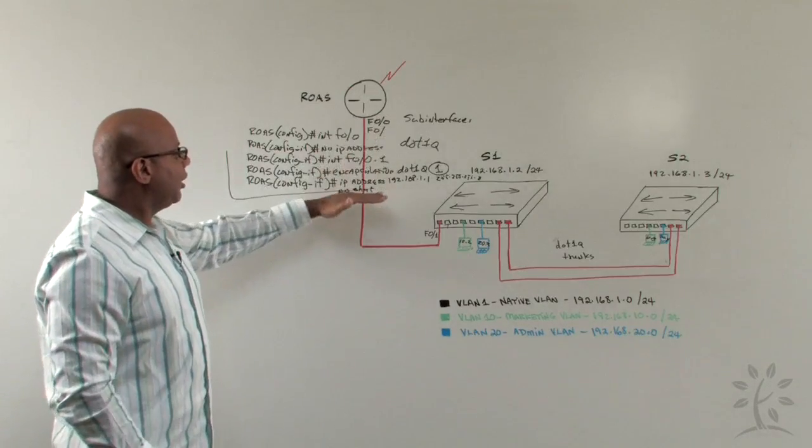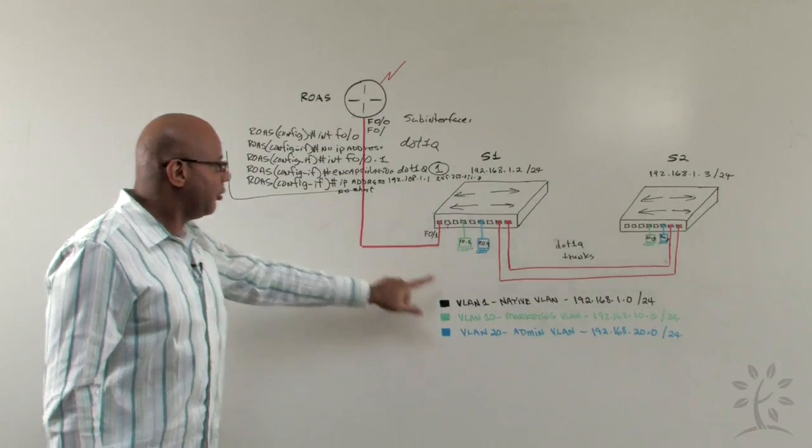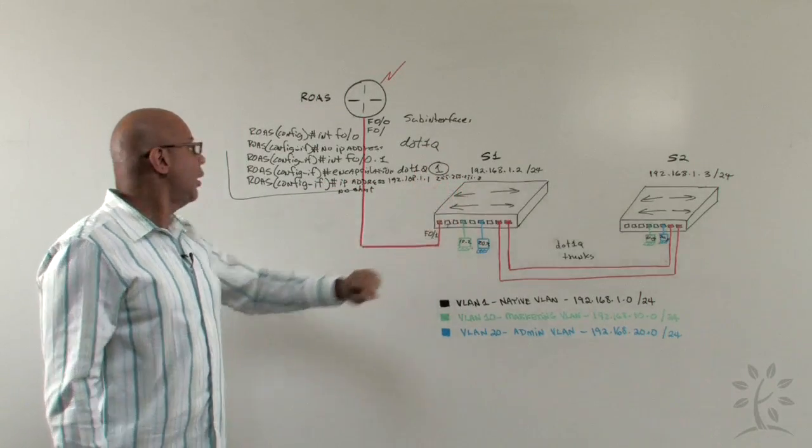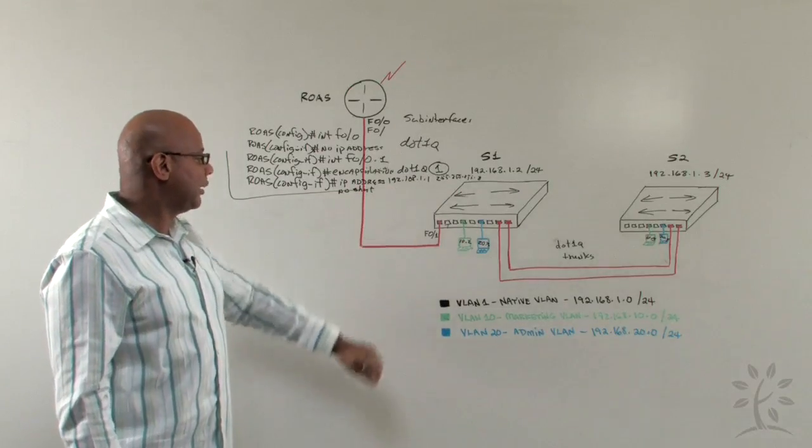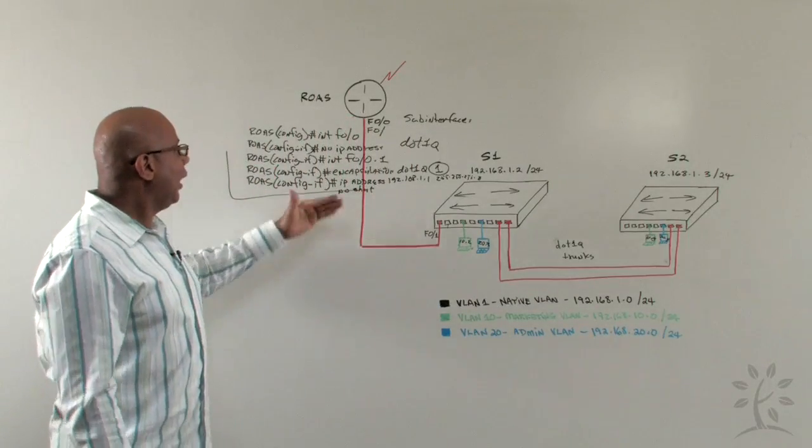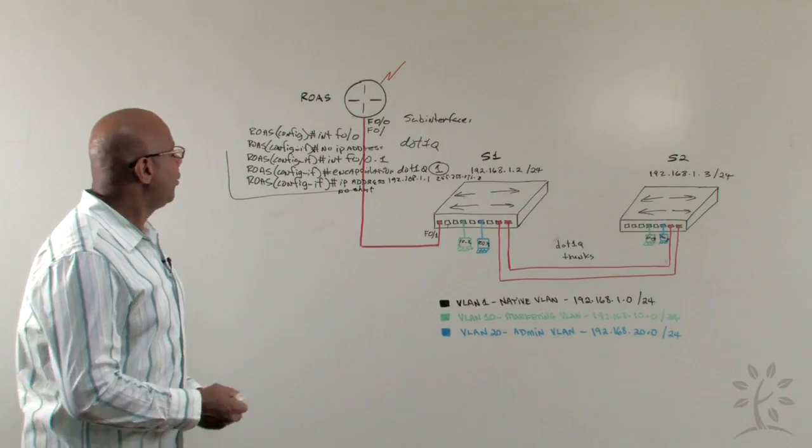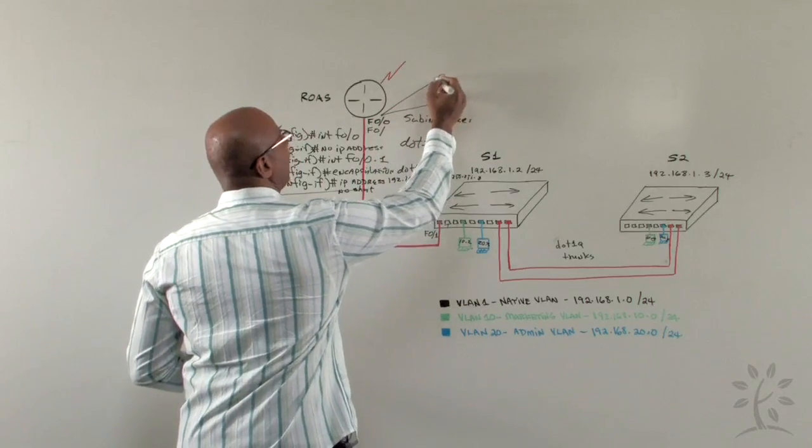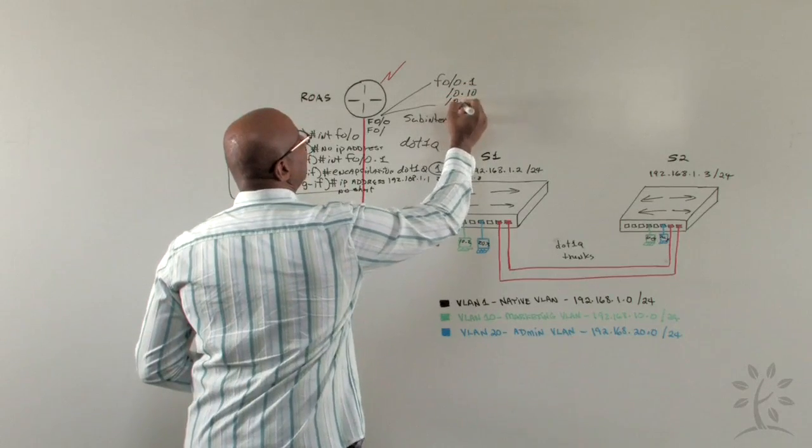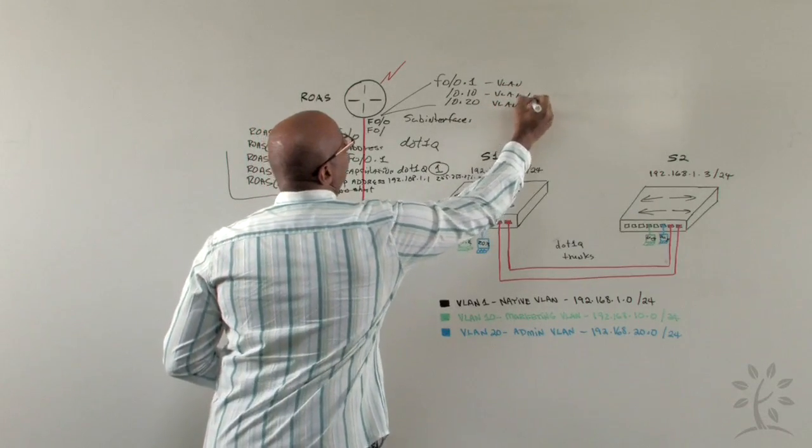We will repeat those same configurations for the other two VLANs. We would go interface FastEthernet00.10 for VLAN 10, type encapsulation 802.1Q10 for that particular VLAN, giving an IP address of 192.168.10.1 because it's on a different network, type no shutdown, and repeat the same exact steps for VLAN 20. What we have done now, we've created three different sub-interfaces. On that one physical interface, we will have sub-interface 0.1, 0.10 for VLAN 10, and 0.20 for VLAN 20. So there's three different sub-interfaces, one per VLAN, that will now allow inter-VLAN routing.